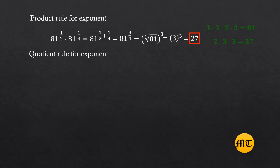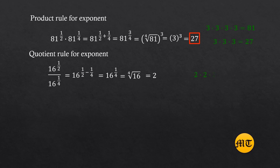Quotient rule for exponents: sixteen raised to one-half over sixteen raised to one-fourth. Since the base is similar, write sixteen and subtract the exponents: one-half minus one-fourth equals one-fourth. So we have sixteen raised to one-fourth. Transform to radical form: the fourth root of sixteen. The fourth root of sixteen equals two, since two times two times two times two equals sixteen. Therefore, the answer is two. In short, for the quotient rule, if the operation is division, the exponents are subtracted.